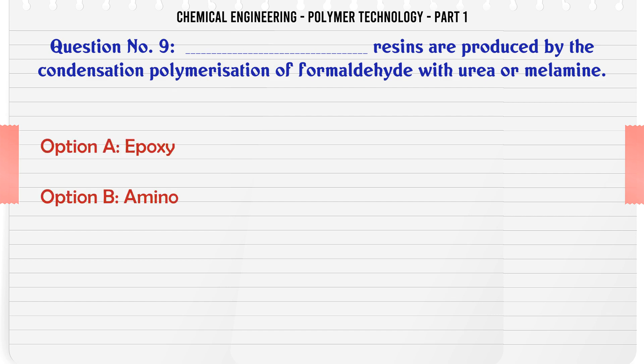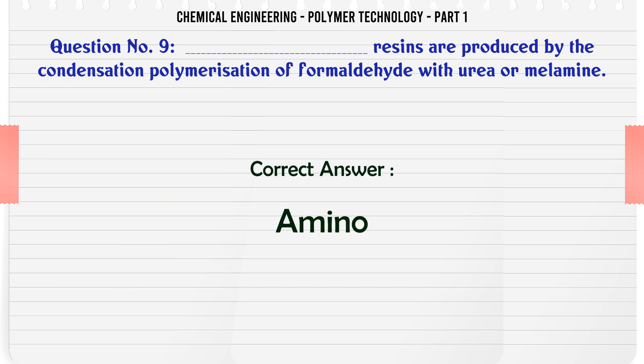Resins produced by the condensation polymerization of formaldehyde with urea or melamine are: A. Epoxy, B. Amino, C. Alkyd, D. Phenolic. The correct answer is Amino.